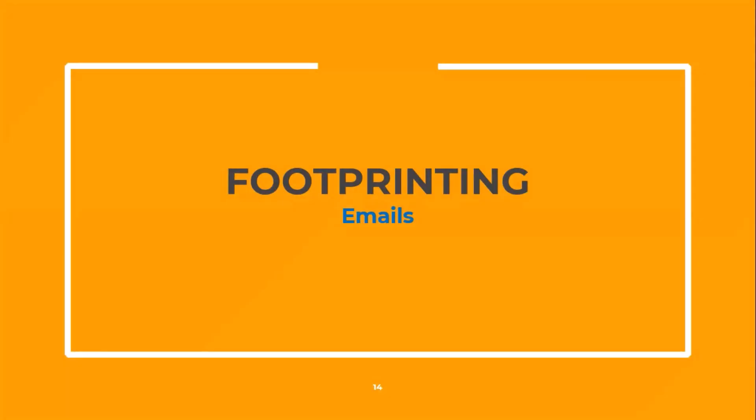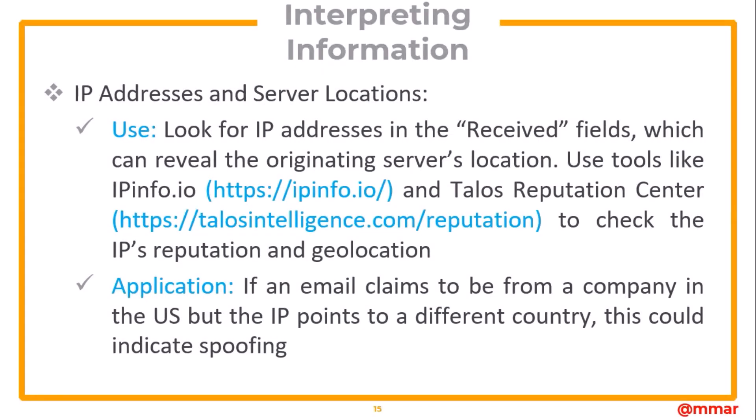Now let us see how we can interpret the email header. We get the complete list of IP addresses and server locations. You can use tools like ipinfo.io and Talos Reputation Center to check the IP's reputation and geolocation. For example, if an email claims to be from a company in the US but the IP points to a different country, this could indicate a spoofing attempt.